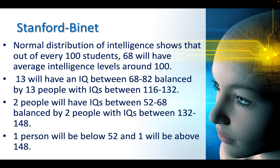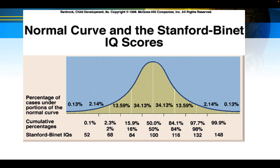Normal distribution of intelligence shows that out of every 100 students, 68 will have average intelligence levels around 100. Thirteen will have an IQ between 68 and 82, balanced by 13 people with IQs between 116 and 132. Two people will have IQs between 52 and 68, balanced by two with IQs between 132 and 148. One person will be below 52 and one will be above 148.